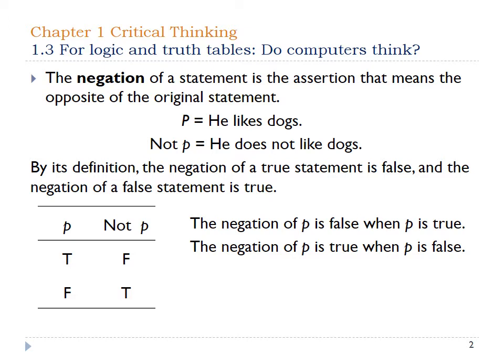So if it's not true, it means it's false at that point. As we see in the truth table at the bottom, when P is true, not P is obviously false. However, the opposite is also true: when P is false, not P has to be true.